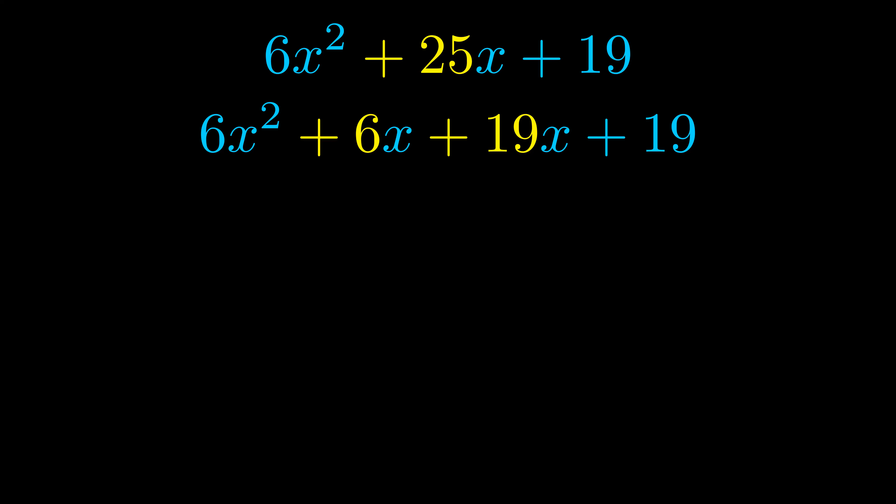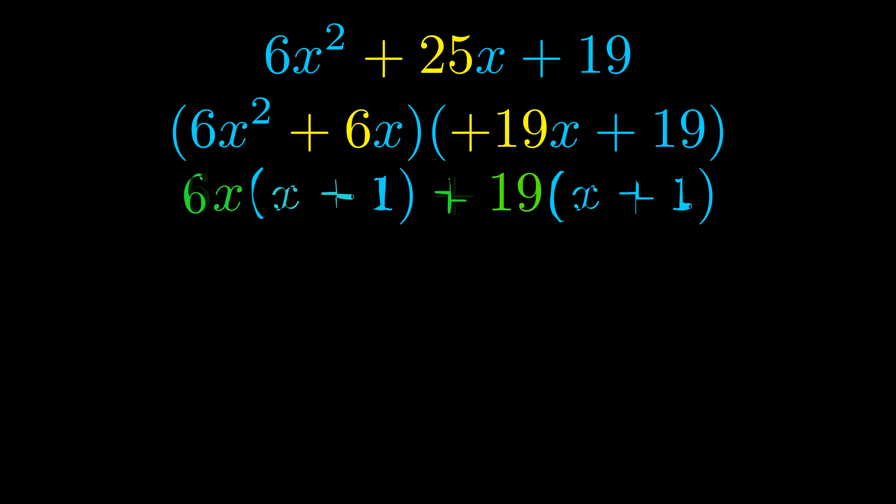Once we've done this we go ahead and we put parentheses around the first term and the last term and we do that so that we can take the greatest common factor out of both terms. We can see the greatest common factor is now outside in green.